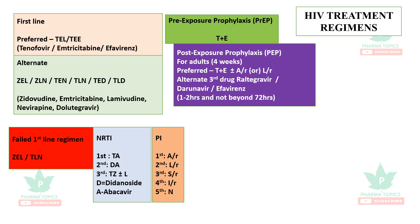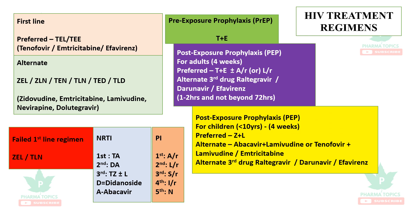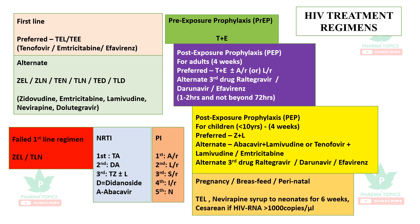Post-exposure prophylaxis should be given within one to two hours of exposure and must not be given beyond 72 hours, as it will be of no use. For children under 10 years, the preferred regimen is zidovudine plus lamivudine. Alternate options are abacavir plus lamivudine, or tenofovir plus lamivudine or emtricitabine. Integrase inhibitors may also be given.